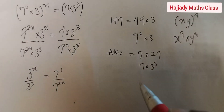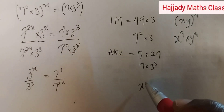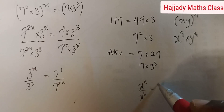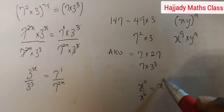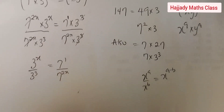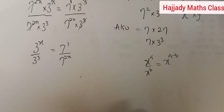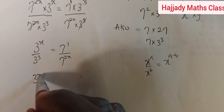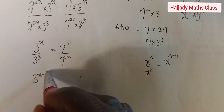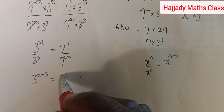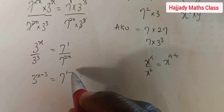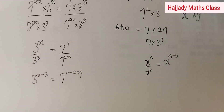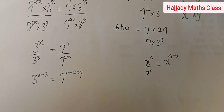Using the division rule of indices — x raised to power a over x raised to power b equals x raised to power (a minus b) — we get on the left-hand side: 3 raised to power (x minus 3) equals 7 raised to power (1 minus 2x). You can check some of our videos on indices.